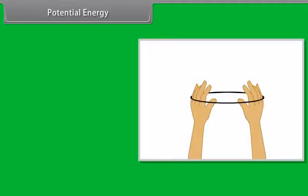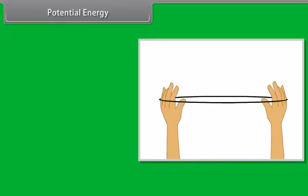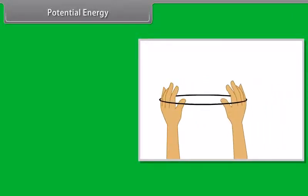To understand potential energy, let's do an activity. Take a rubber band, hold it at one end, and pull from the other. You will see that the band stretches. Now release the band at one of the ends.